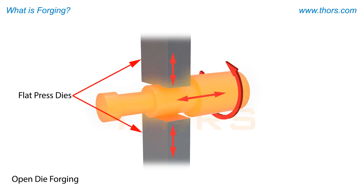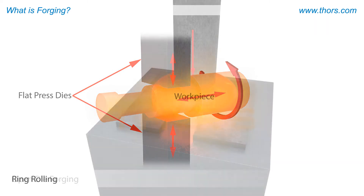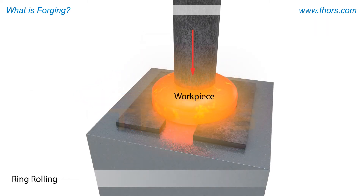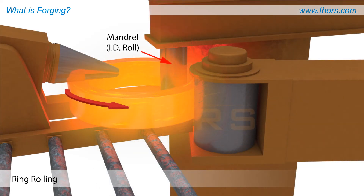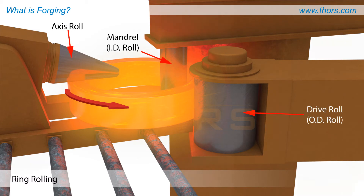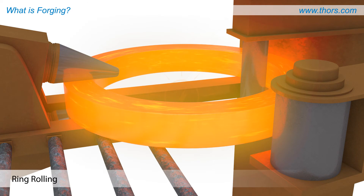Open die forging utilizes a flat die with no confinement. Ring rolling pierces a round steel billet with a mandrel to form a donut-shaped ring. The hot ring is then rolled between a drive roll, an idler roll, and axis rolls to form the desired shape.